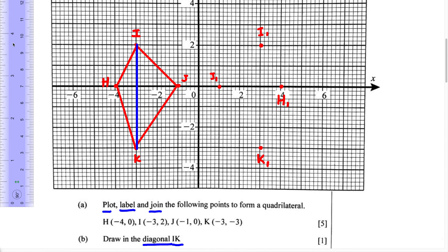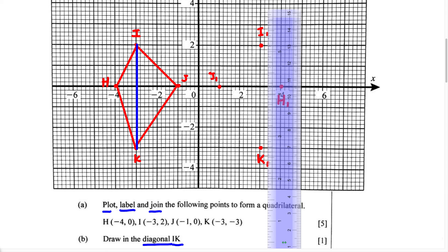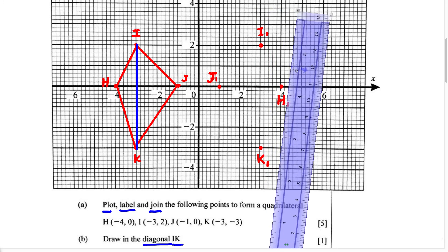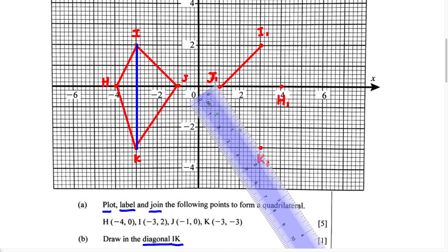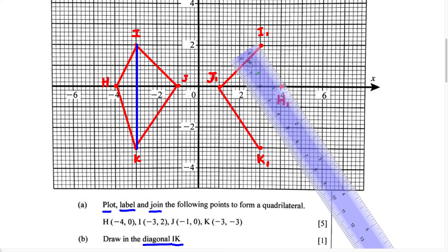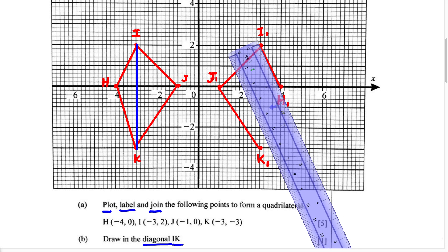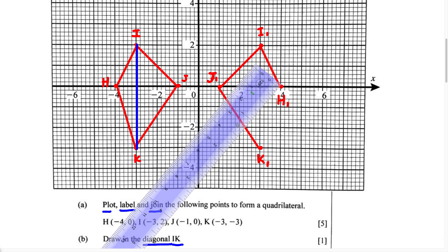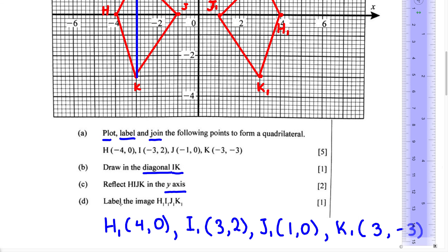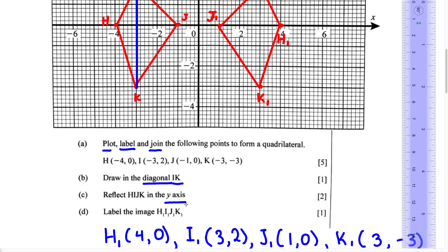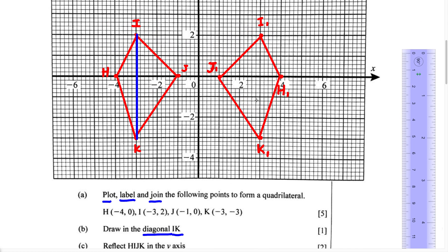Now we're just going to join these points using our ruler. We're going to go from I to J, then from J to K, then from I to H, and finally join H1 to K1. We have successfully completed reflecting this quadrilateral H, I, J, K in the Y-axis, which gave us H1, I1, J1, and K1. For part D, it says label the image H1, I1, J1, and K1 — but as we can see, we already did that, which means we have successfully completed this problem.